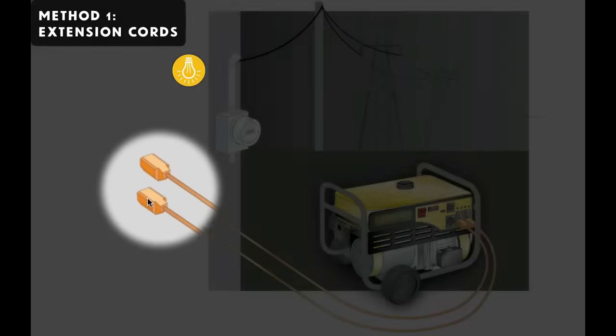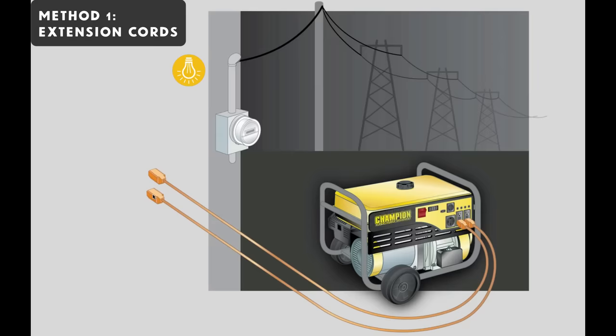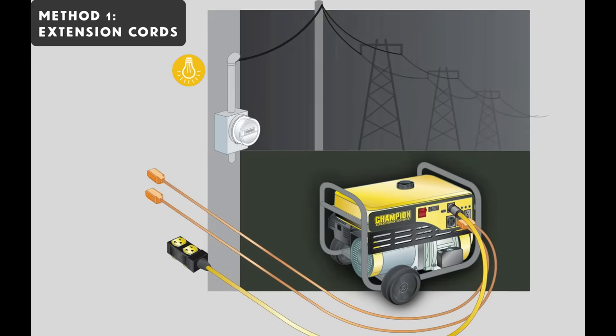One way around this problem is to get a dedicated generator extension cord. It plugs into one of the larger outlets, this one you see here, and at the other end, it has multiple female outlets. Four is pretty typical. So you get essentially four taps from one outlet on the generator. It's a reasonable option, but far from ideal.